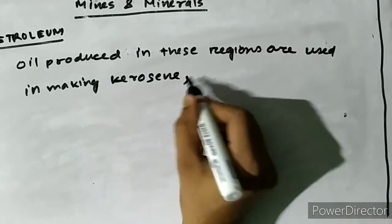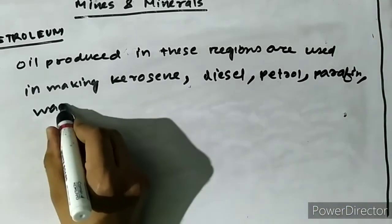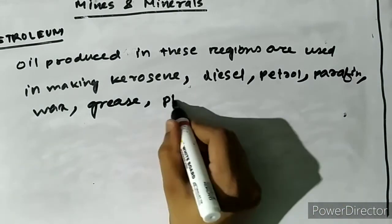The crude oil of this region is used in the refineries of Digboi, Nunmati, Bongaigaon Petrochemical Complex Limited, Numoligar, and Baroni to produce kerosene, diesel, petrol, wax, paraffin, grease, synthetic rubber, plastic, and various other materials.